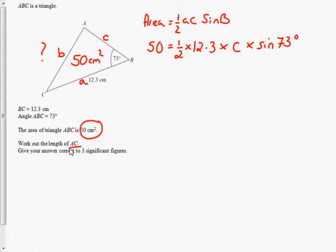That would mean that I could rearrange my formula and change my half to 0.5 times 12.3 times the sine of 73. So this is getting C on its own by dividing by each of the other terms multiplied by C.